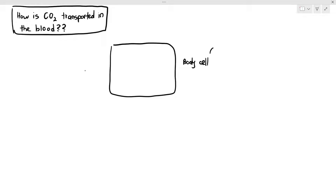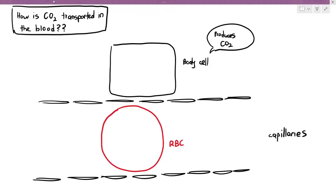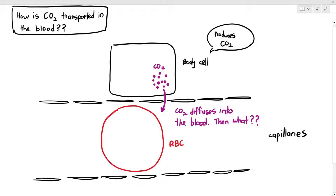Our body cells produce CO2. The CO2 will diffuse into the blood through the capillary walls because the body cell has a higher partial pressure or higher concentration of CO2, while the blood has a lower partial pressure or lower concentration of CO2. Diffusion works from a higher to lower concentration gradient — down the concentration gradient. So once CO2 diffuses into the blood, what happens?